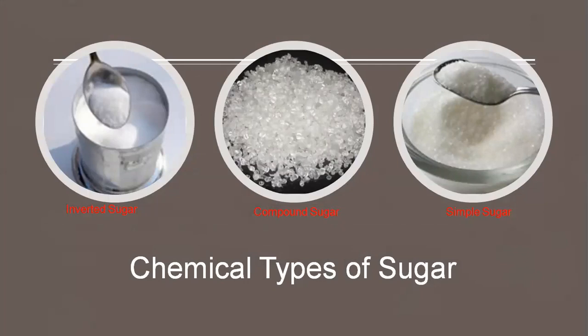Simple sugar includes glucose or dextrose and fructose or galactose. These are called monosaccharides. Compound sugar includes sucrose, lactose, and maltose. These are called disaccharides. Invert sugar is a mixture of glucose and fructose which can be made by heating a sucrose solution with an acid.